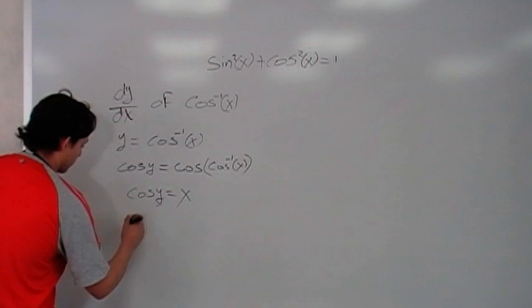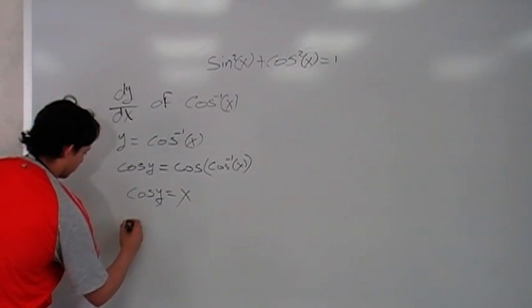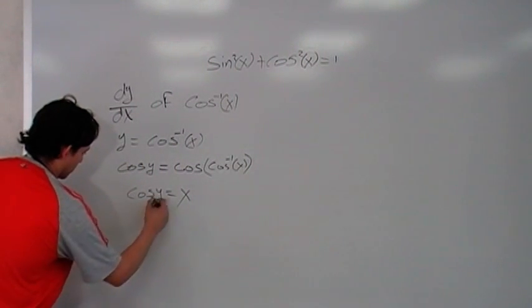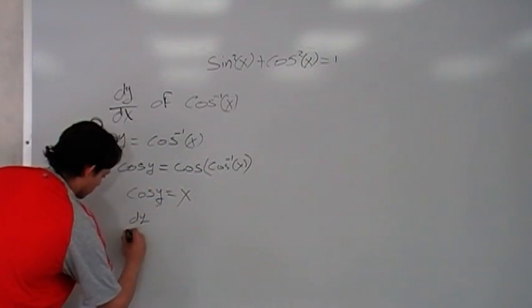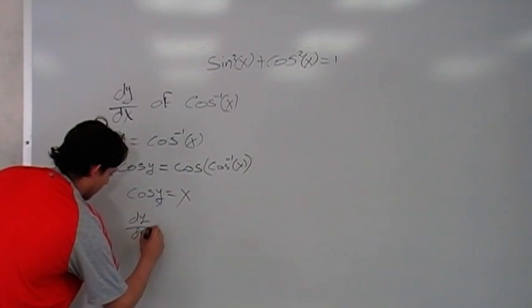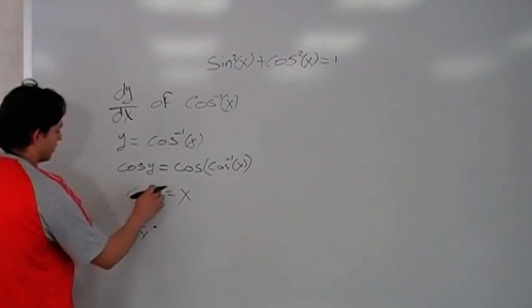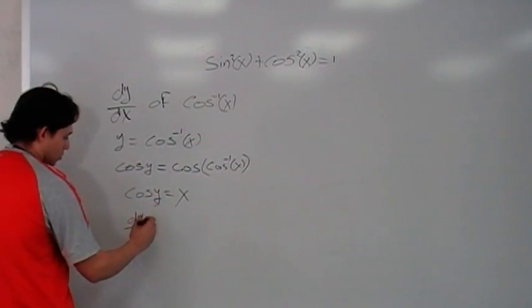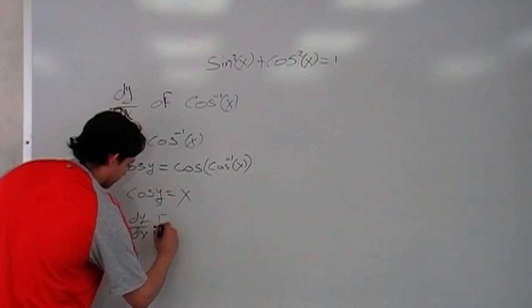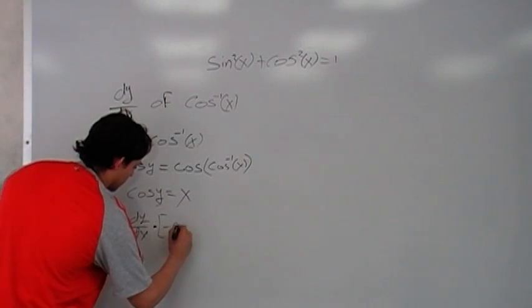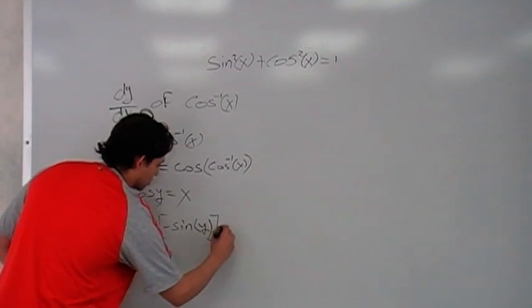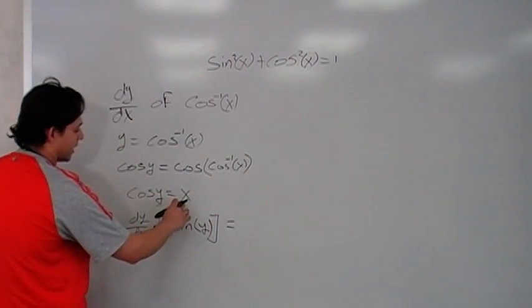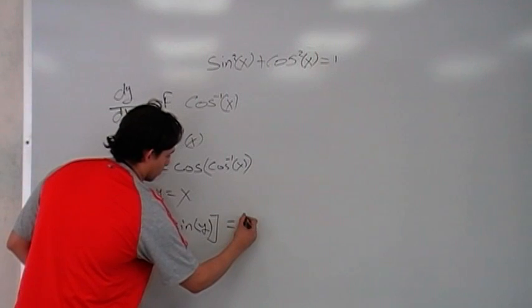We are going to say the derivative of the inverse, so it will be just dy dx times the derivative of the outside, y will be negative sin of y. And everything is going to be equal to the derivative of x is just plain 1.